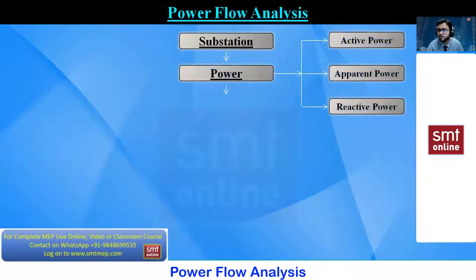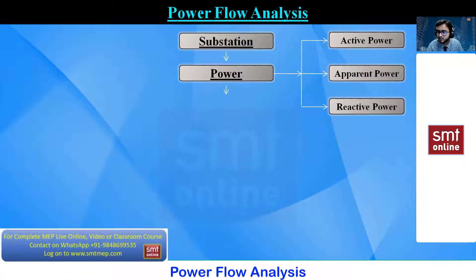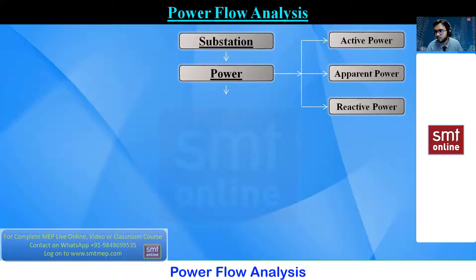From the substation we get power. This power is classified into three types: active power, apparent power, and reactive power. We are going to discuss these in detail in future classes along with examples and the basic formulas.